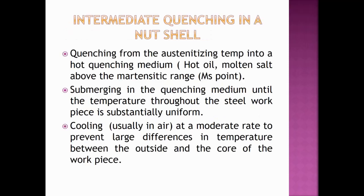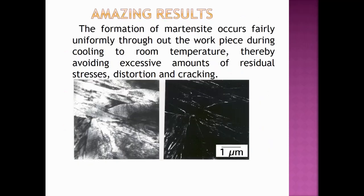The steps are as follows: first, quench from the austenitizing temperature into a hot quenching medium — hot oil or molten salt — held above the martensitic range. Then, hold the part submerged in the quenching medium until the temperature throughout the workpiece is substantially uniform, cooling at a moderate rate to prevent large temperature differences between the outside and the core. Very good results are obtained since the formation of martensite occurs fairly uniformly throughout the workpiece during cooling to room temperature, even for low carbon steel, thereby avoiding excessive residual stresses, distortion, and cracking.